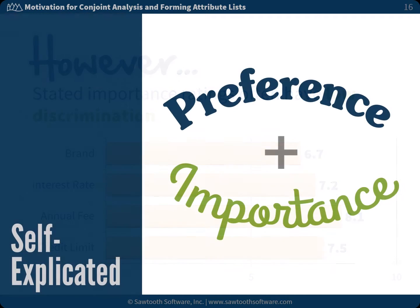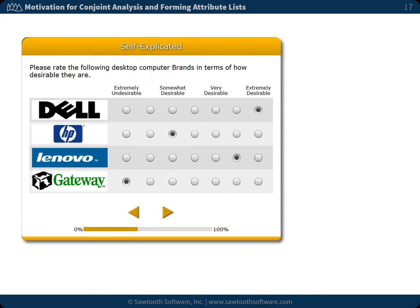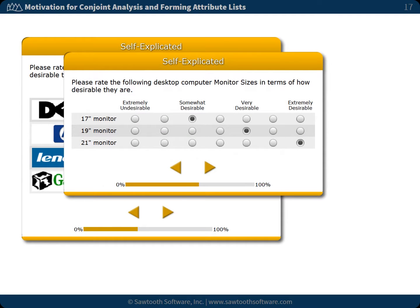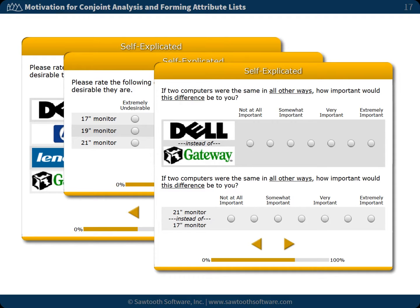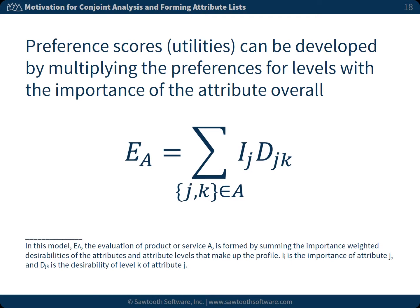Self-explicated models use a combination of questions like which brands do you prefer and how important is the brand? In other words, it combines ratings of levels within attributes with attribute importance ratings in order to estimate overall preference. For each attribute — brand, price, performance, etc. — respondents rate or rank the levels within that attribute. Respondents also rate an overall importance for the attribute when considering the various levels involved. Preference scores, or utilities, can be developed by multiplying the preferences for levels with the importance of the attribute overall.